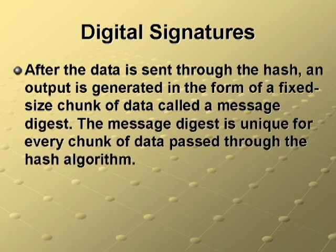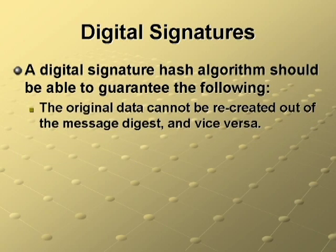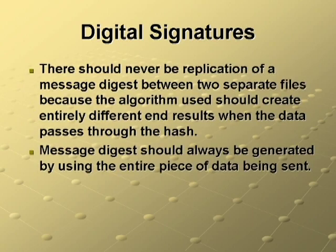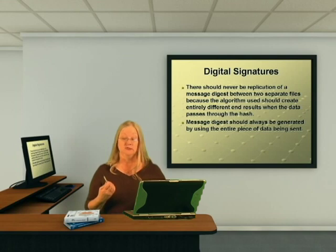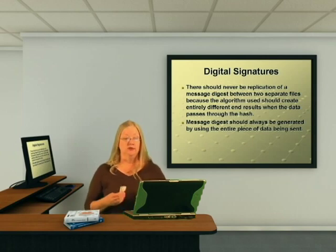This message digest is unique for every chunk of data passed through the hash algorithm. The receiver of the data can perform a similar hash function, and if the values match, then the receiver knows that the data has not been modified in transmission. A digital signature hash algorithm should guarantee that the original data cannot be recreated out of the message digest and vice versa. There should never be replication of a message digest between two separate files. Message digests should always be generated using the entire piece of data being sent. Thus, if you're downloading a file from a website, you must wait until the entire file is downloaded before you can run the hash process to verify the file.